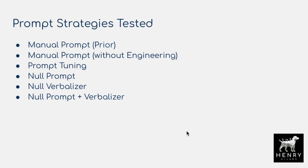To quickly recap, the prompting strategies tested in this paper are: manual prompts designed in pattern exploiting training; manual prompts designed by the authors for null prompts; prompt tuning — embedding the prompt into continuous space and optimizing with gradient descent; null prompt — just inputs with a mask and verbalizer; null verbalizer — same approach but without a verbalizer; and null prompt with no verbalizer either.